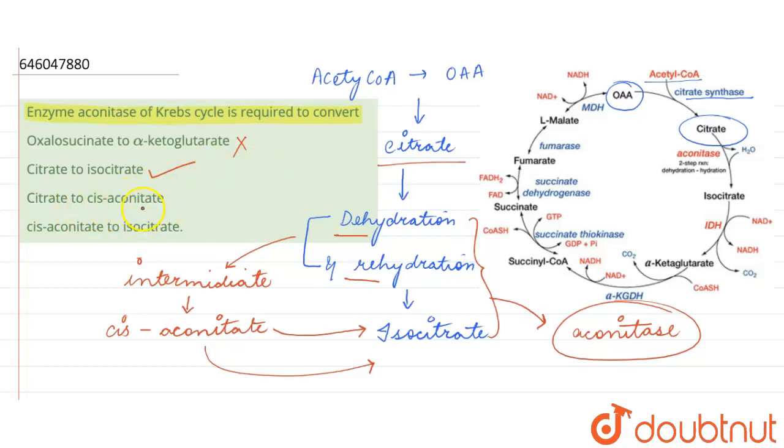Then citrate to cisaconitate. Now, citrate to cisaconitate is being converted here. But this is an intermediate product only and it is soon quickly converted into isocitrate. That's why this will not be the answer. And cisaconitate to isocitrate again. Cisaconitate is only the intermediate product and is not the main product in the Krebs cycle. Therefore, this will also be incorrect. Our correct answer is option two.